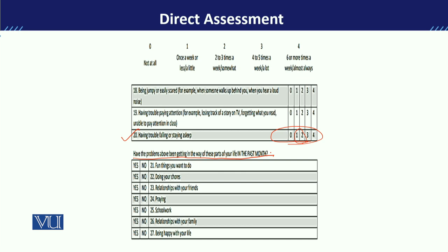The next section asks about problems getting in the way of different parts of life in the past month. The reference period is one month. Items include: fun things you want to do, your chores, your involvement in personal life, relationships with friends, and school.